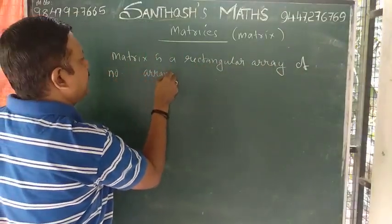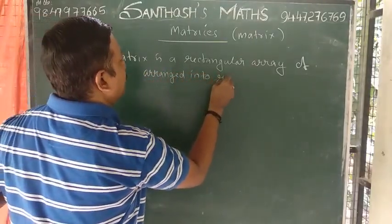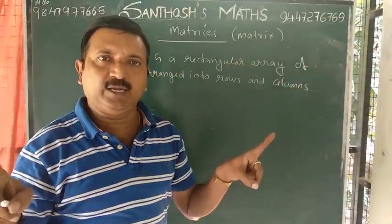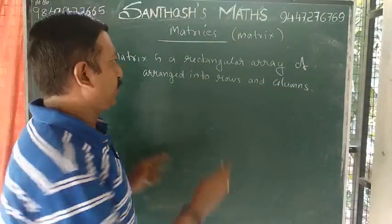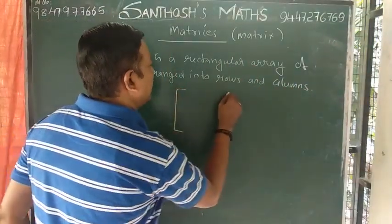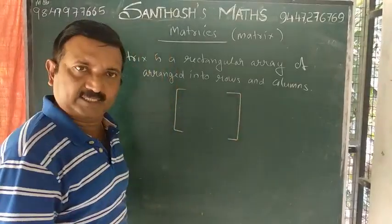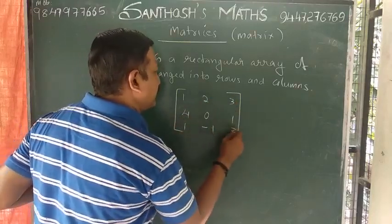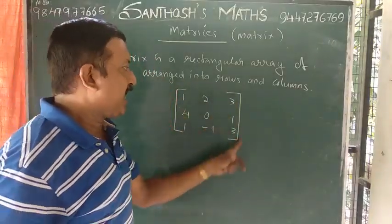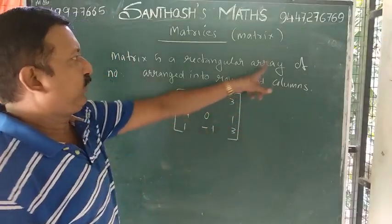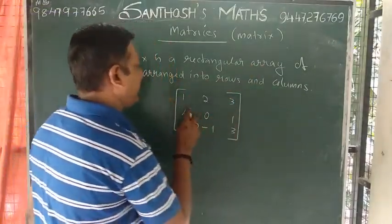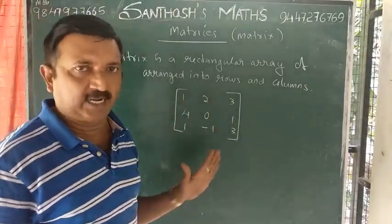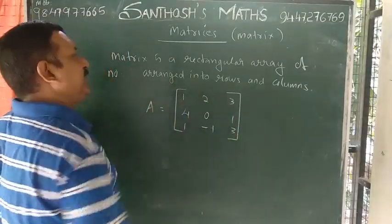A matrix is a rectangular array of numbers arranged into rows and columns. So this matrix is a rectangular array of numbers arranged into rows and columns: 1, 2, 3, 4, 0, 1, 1, 1, 1, 3. A matrix is a rectangular array. We can see a comma, negative sign, positive real number. We can write: A is equal to this matrix.